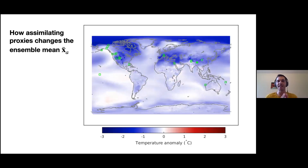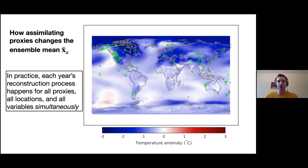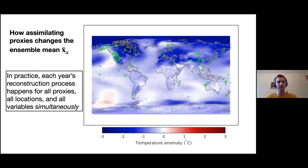For this example I chose a volcanic eruption year, so it gets cold — we can see all these proxies made that year particularly cold because it was a volcanic eruption year. In practice, the data assimilation happens all at once — for every year, we assimilate all the proxies at all locations for all climate variables simultaneously. I don't actually step through one at a time; it all happens simultaneously.